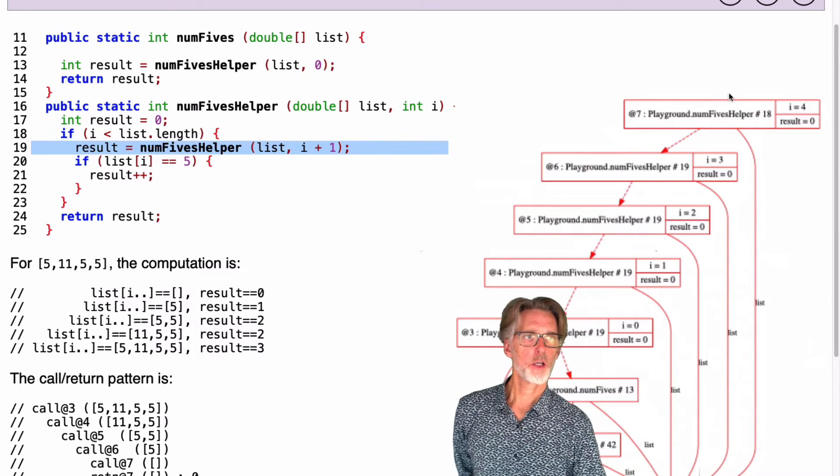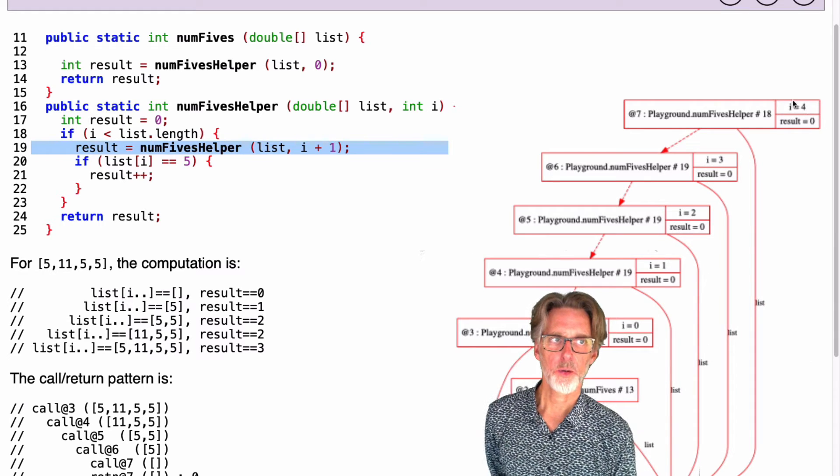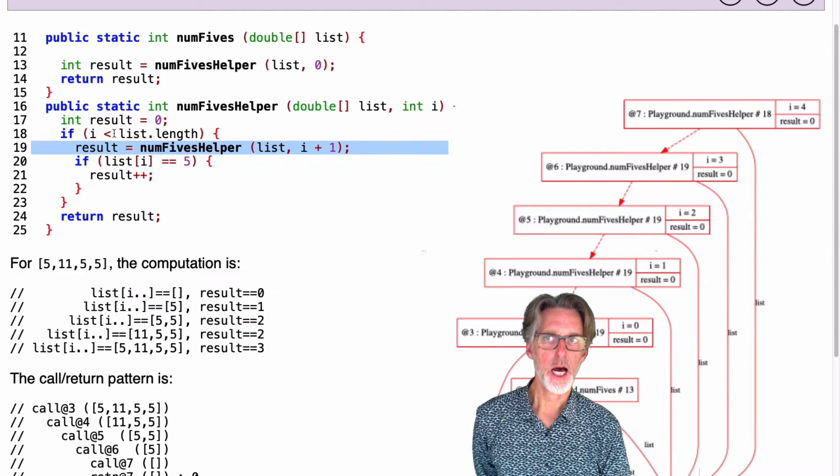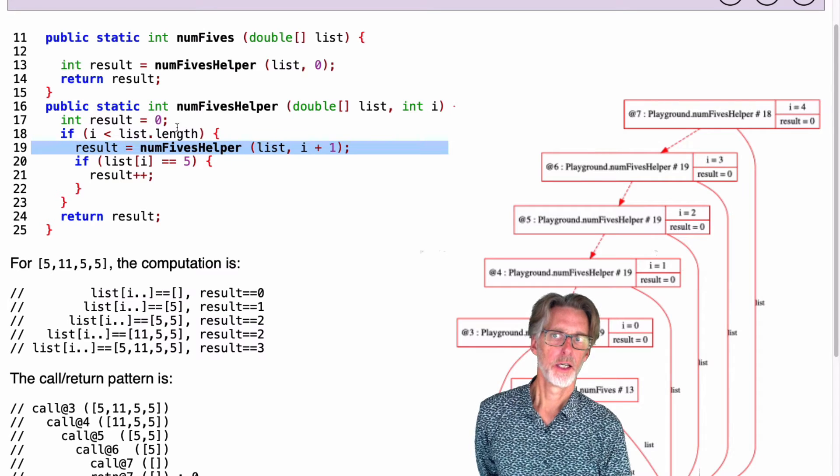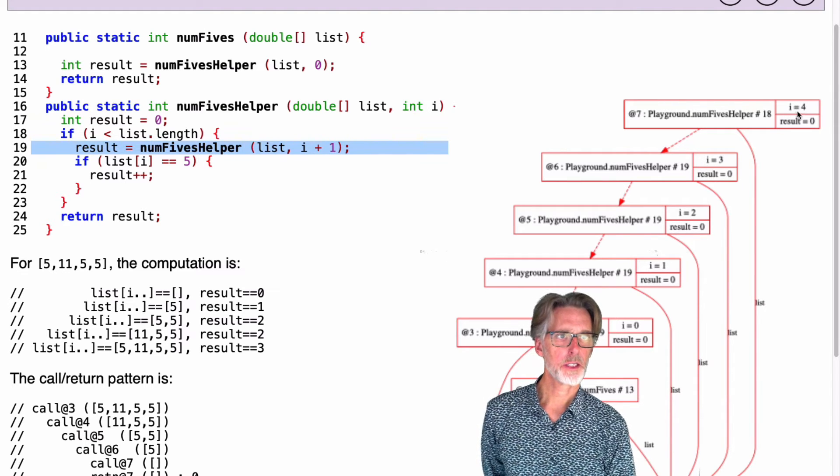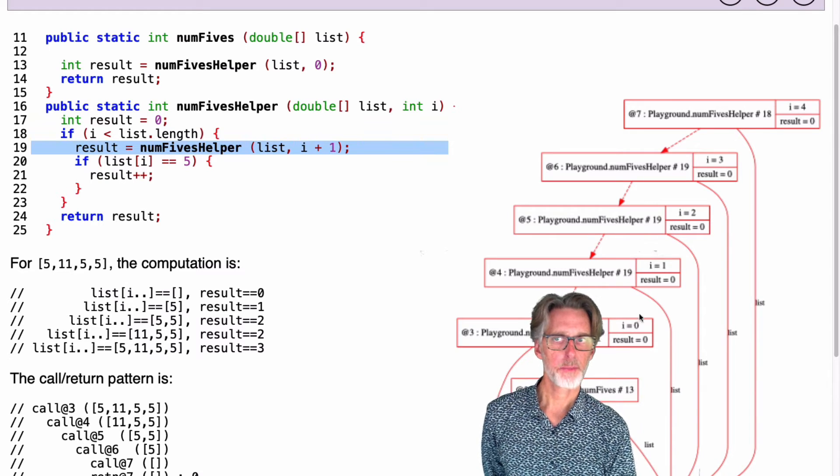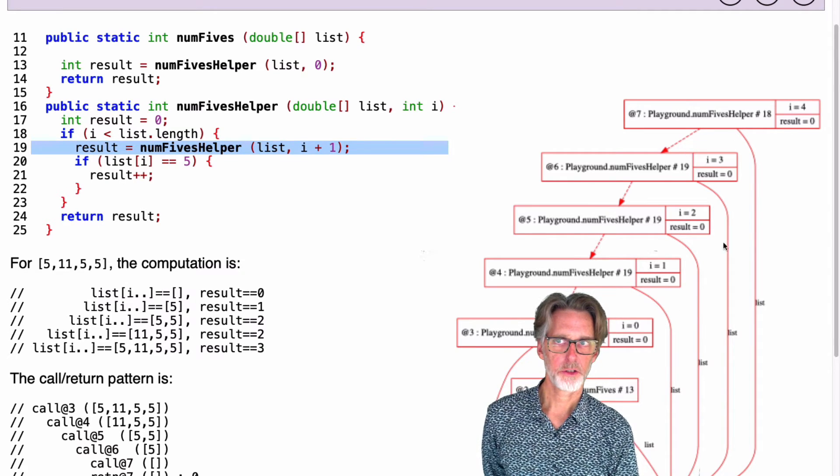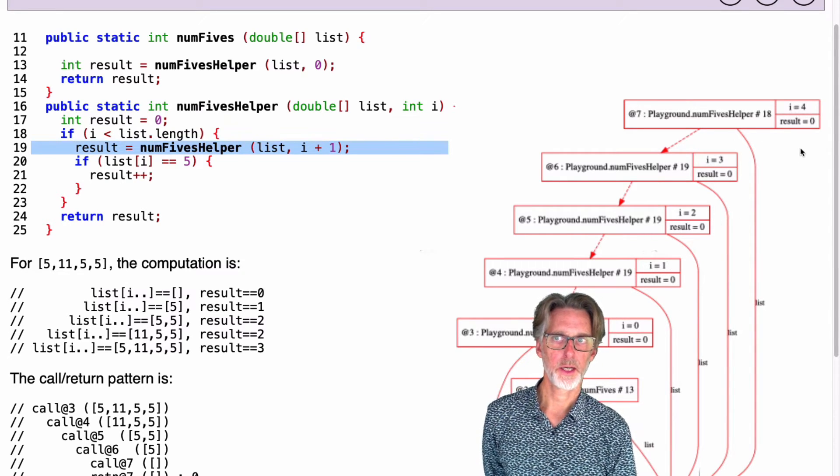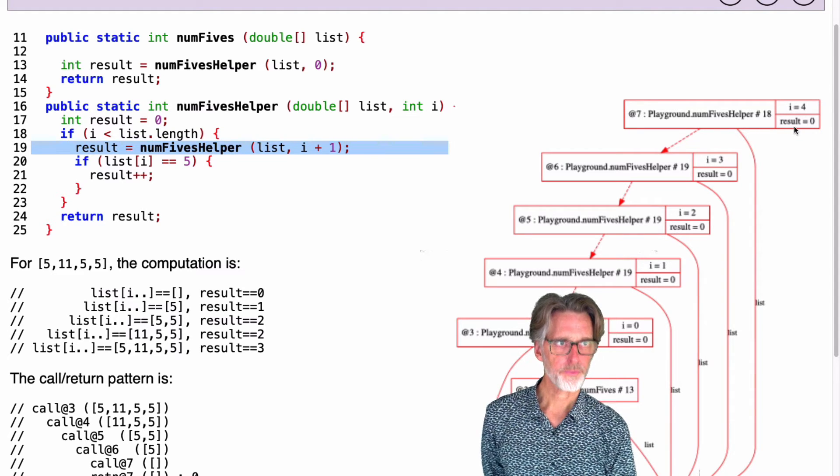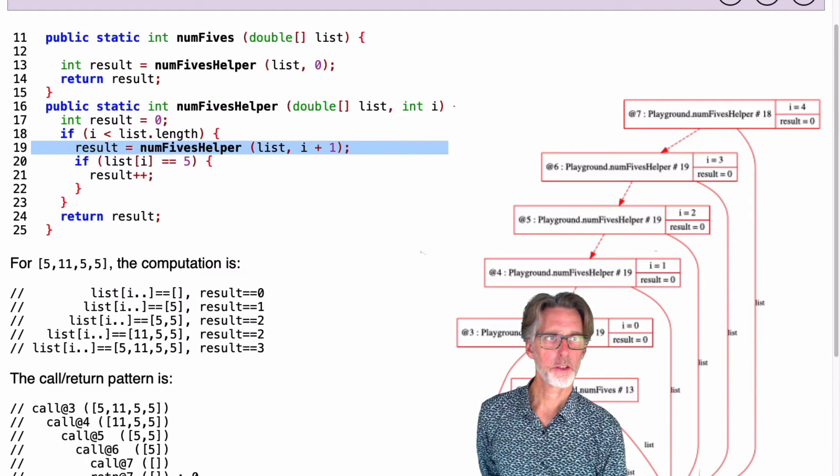And it's only when we get to the last recursive call where i is four, that's where i is not properly less than the length, that we can just return. So this function, note that the results here are all zero, no computation has happened that's of interest. All we've done is sort of gone through i up to the end. But at this point, we'll return zero.